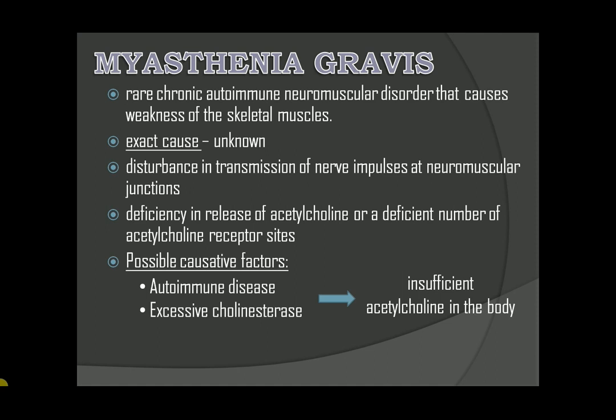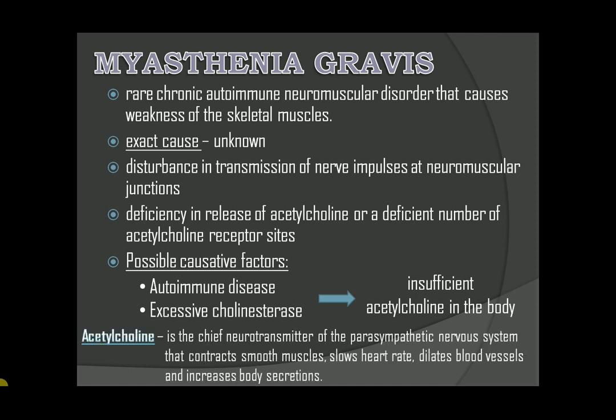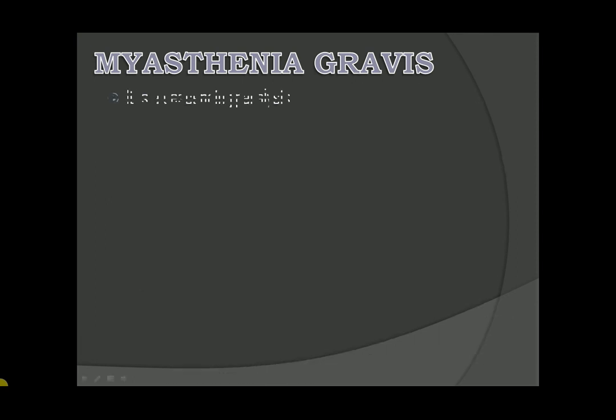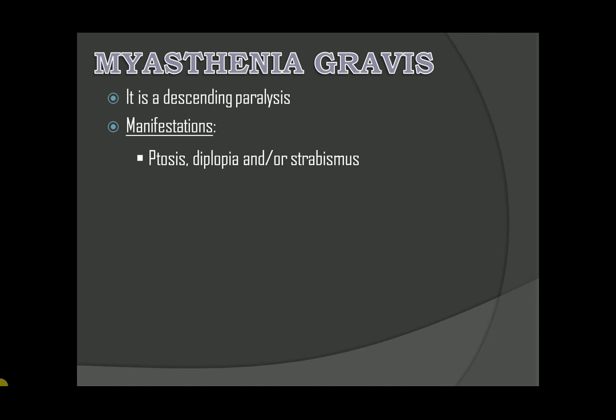What is acetylcholine? It is the chief neurotransmitter of the parasympathetic nervous system that contracts smooth muscles, slows heart rate, dilates blood vessels, and increases body secretions. Therefore, a decreased acetylcholine will decrease the contraction or strength of smooth muscle movements. It is a descending paralysis. Manifestations include ptosis, diplopia, and/or strabismus, dysphagia, and drooling.